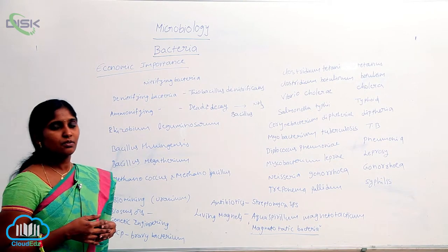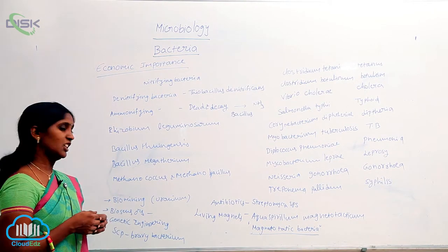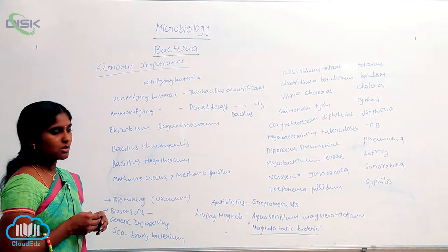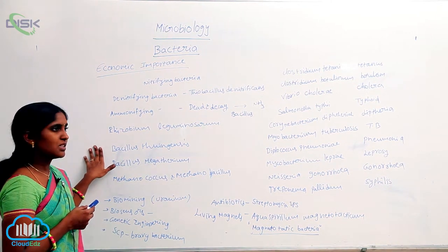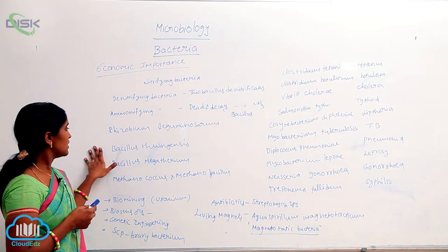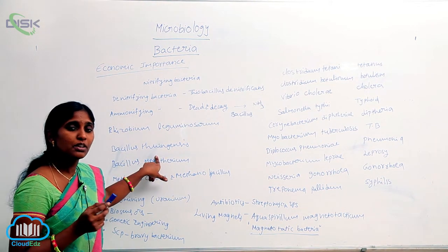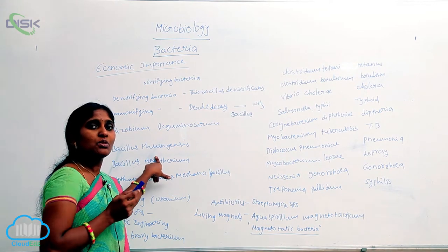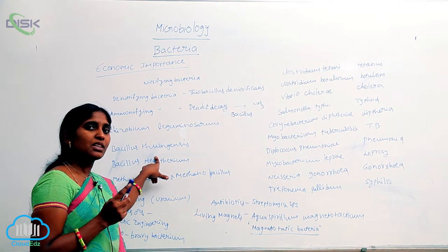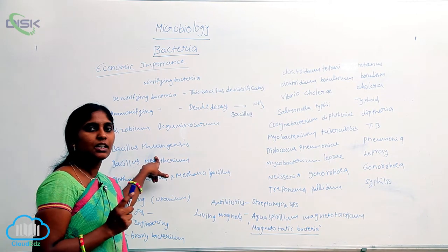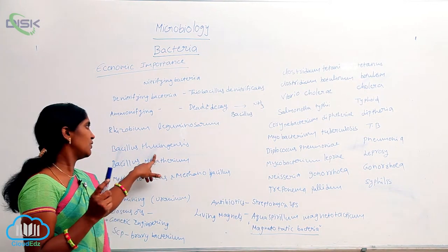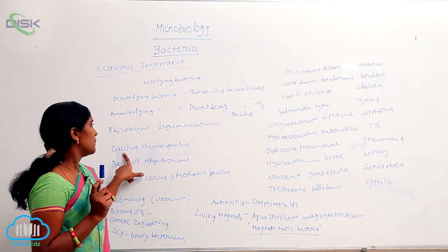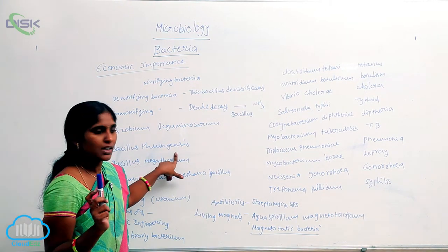Bacillus thuringiensis is relevant in genetic engineering studies where GM crops are produced through gene transfers. Bacillus thuringiensis is responsible for the production of Bt cotton. The cry genes produce endotoxins which are toxic to insects, giving them insecticidal properties. Based on this, Bt cotton is developed utilizing Bacillus thuringiensis.